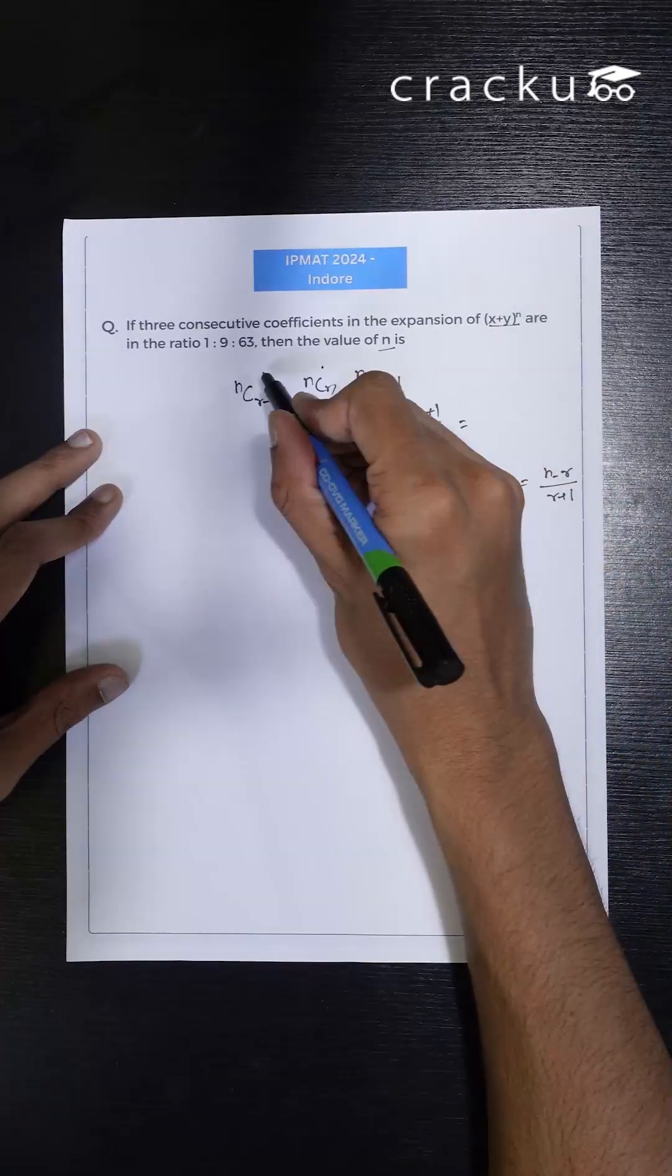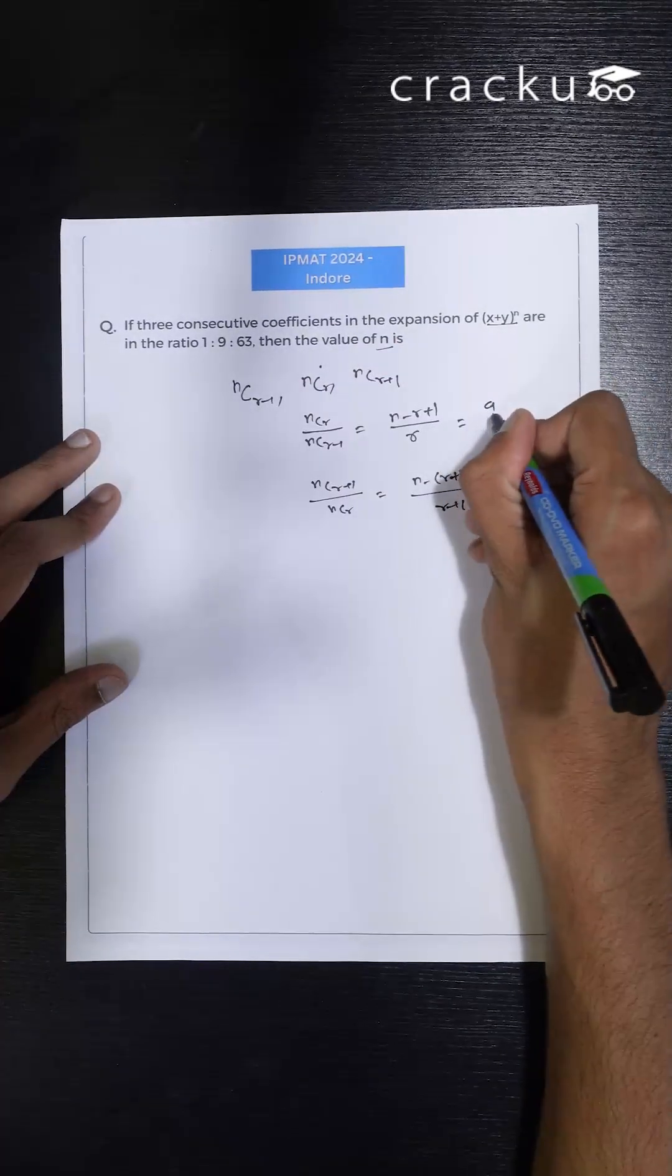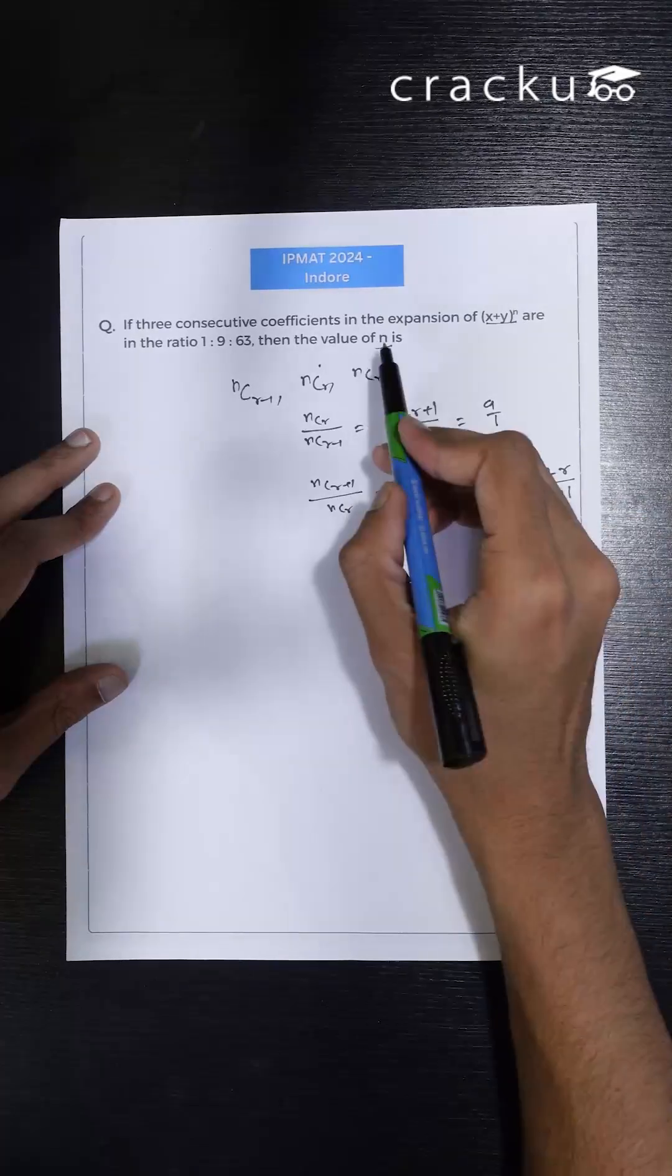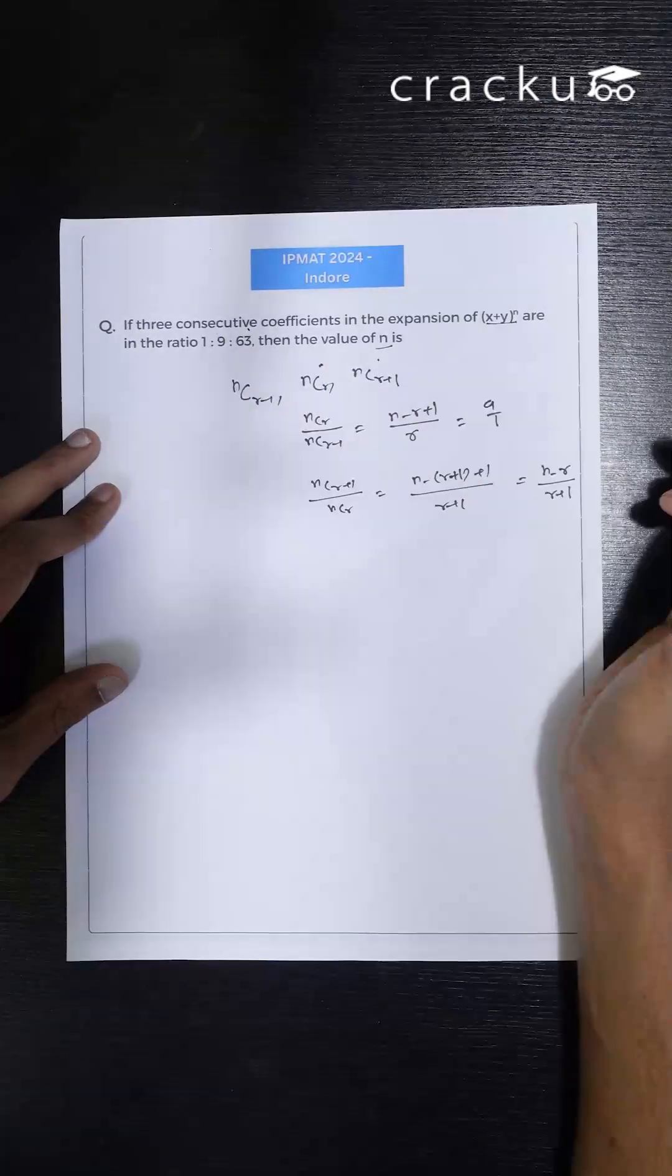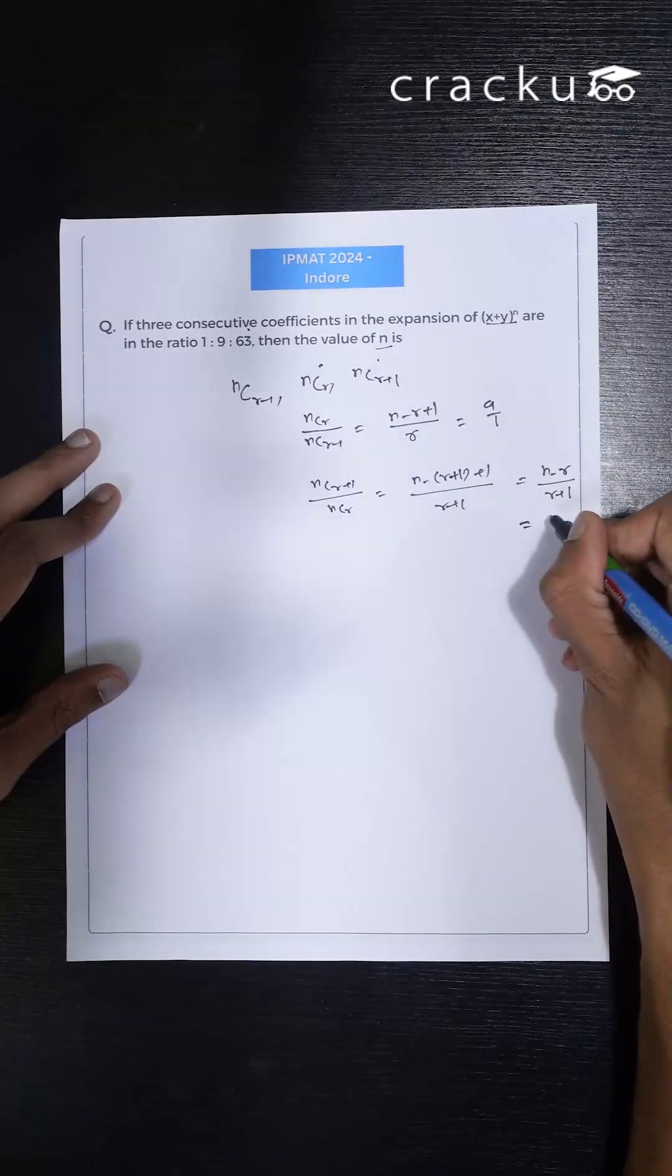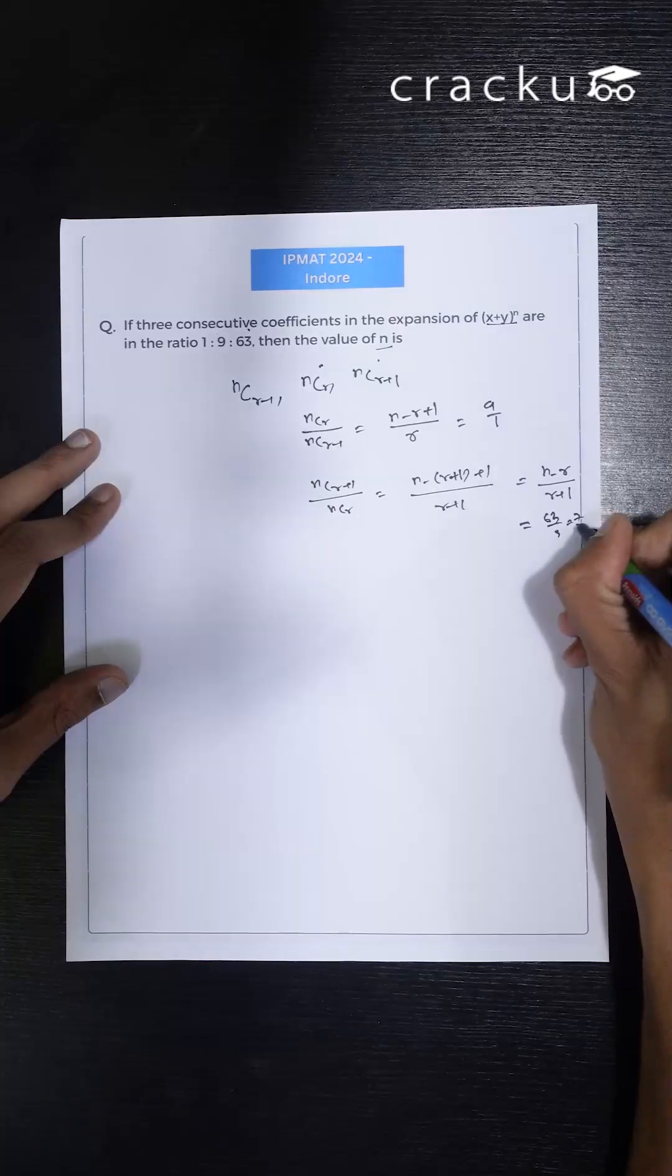Now this ratio, the ratio of these two, is given as 9:1, and this ratio, the ratio of these two, is given as 63:9 or 7:1.